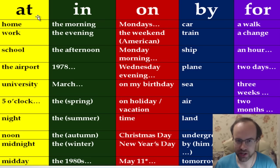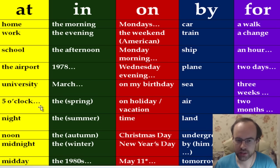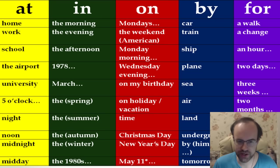Starting with 'at': remember we say at home, at work, at school, at the airport, at university. Then different phrases with o'clock — at five o'clock, at six o'clock, at seven o'clock and so on. Next: at night, at noon, at midnight, at midday. There are other very important phrases with 'at' as well.